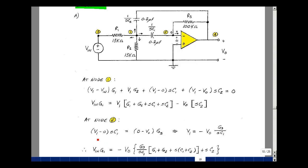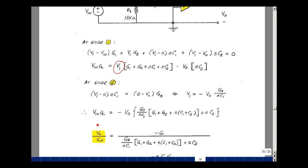So I can also solve for V1. V1 is going to be equal to minus Vout times G3 divided by SC1. I could go back and substitute that in right over here. Let's do that.